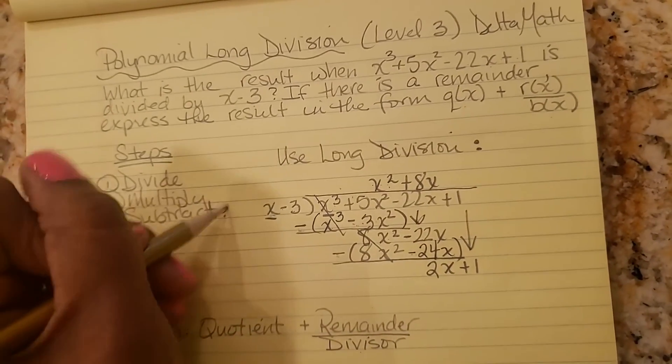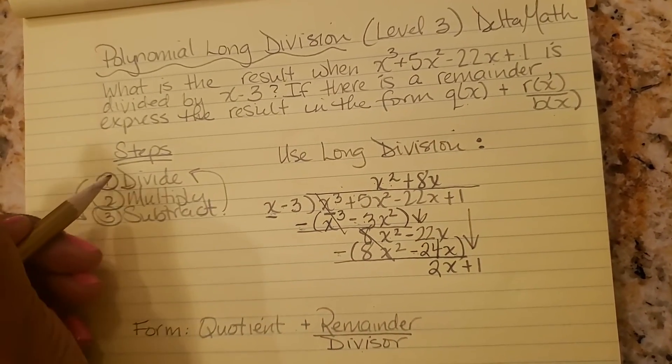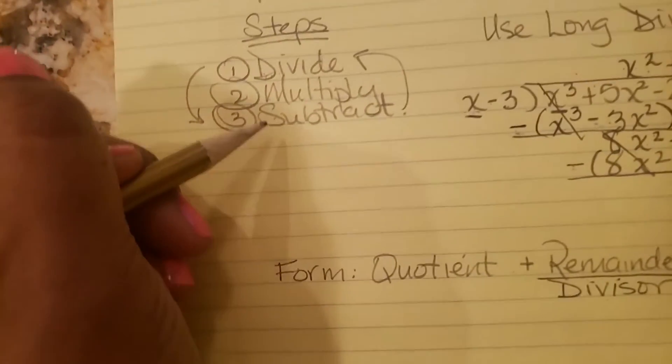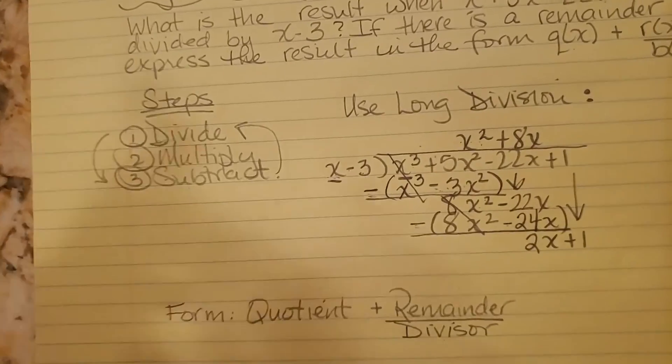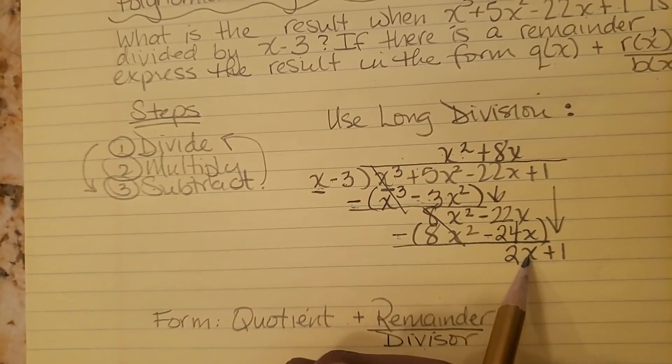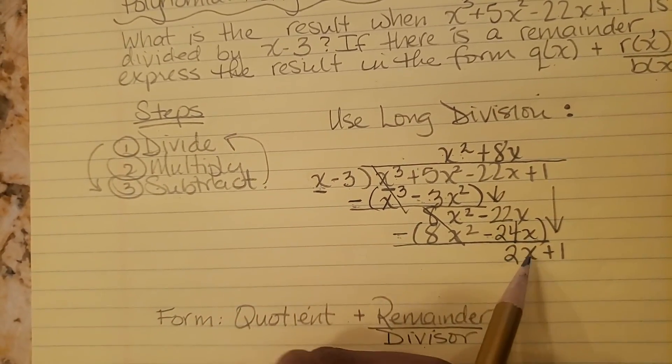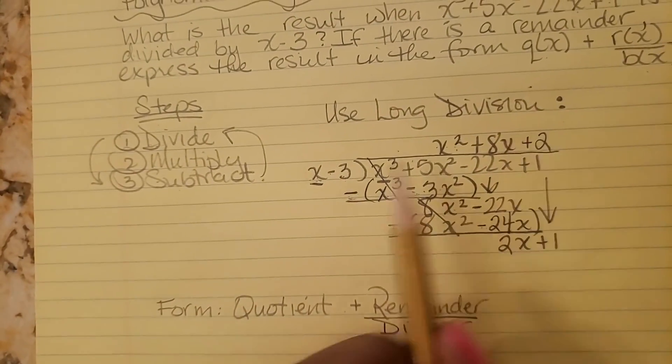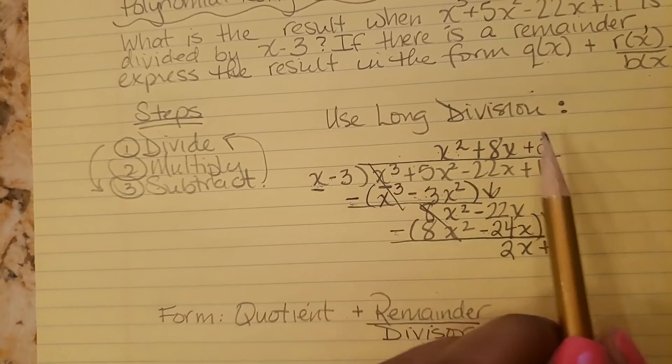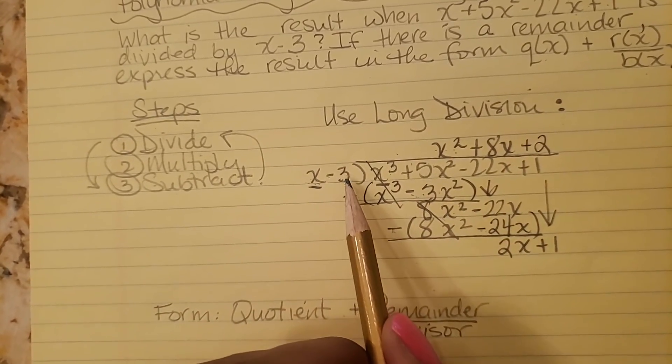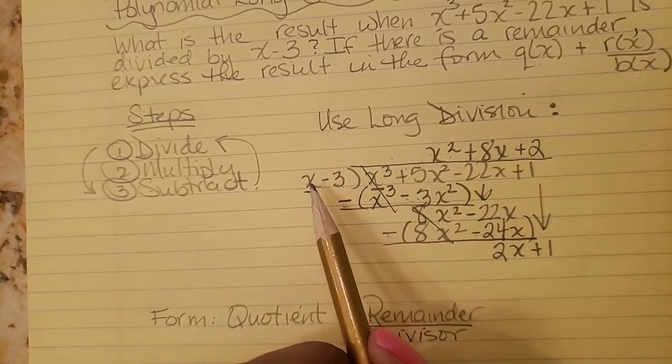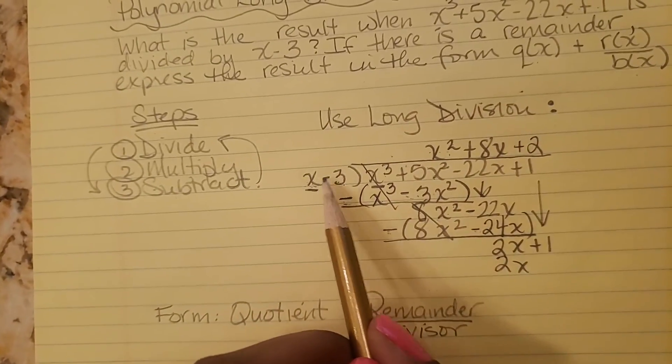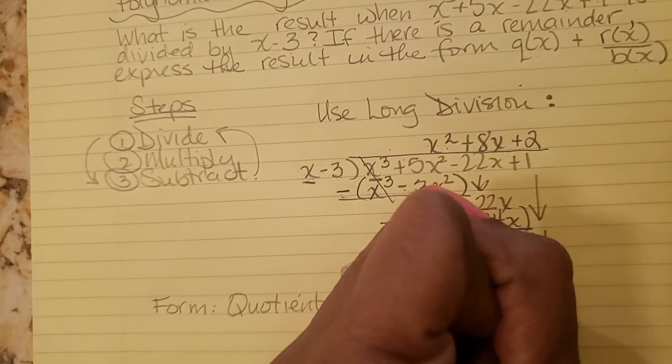And let's repeat one more time. Just keep doing this: divide, multiply, subtract. Divide, multiply, subtract. Over and over. Okay. So x into 2x. Well, x times 2 is 2x. So we put our plus 2. And now we multiply, right? After you divide and multiply. So 2 times x minus 3. 2 times x is 2x, and 2 times a minus 3 is a minus 6.